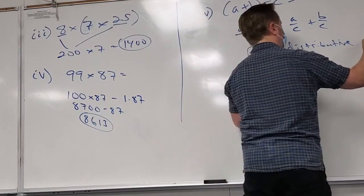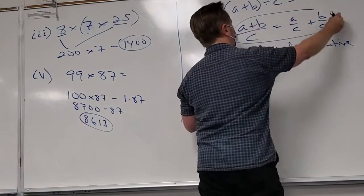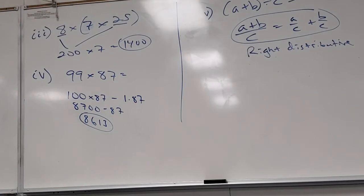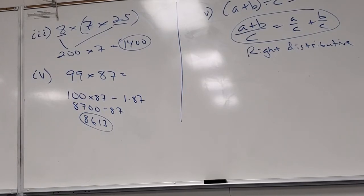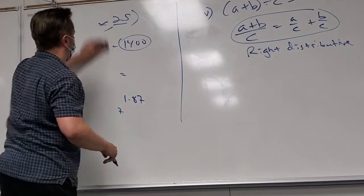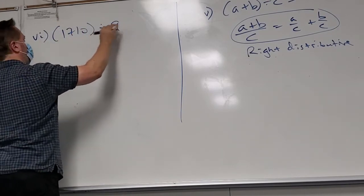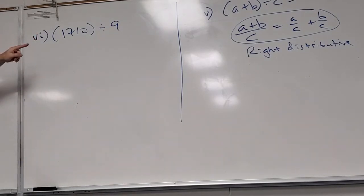It's a long name for a simple idea — you can break apart the numerator. What if you had to do 1710 divided by nine? There are only one part in the numerator and denominator here, but you can fix that — split 1710 into two numbers that each divide nicely by nine.